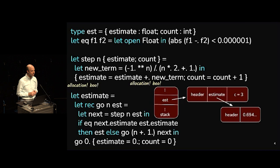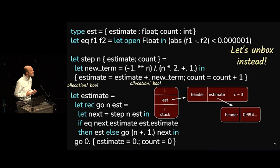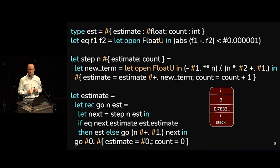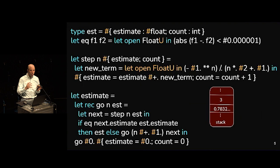The estimate field is going to be a pointer to another block in memory that stores the actual floating point value. We lose a lot of efficiency by doing this because we have to allocate all this memory. Instead, let's just unbox. Here's another version of this program that is unboxed — everything changed from the previous slide is highlighted in orange.